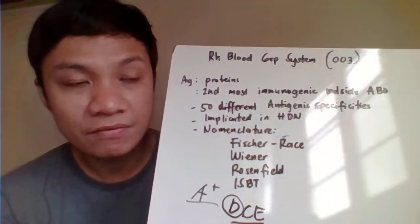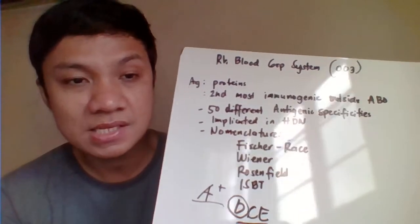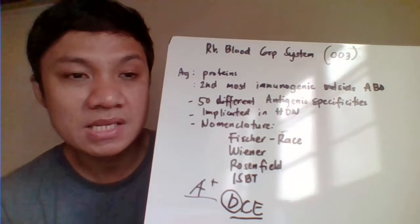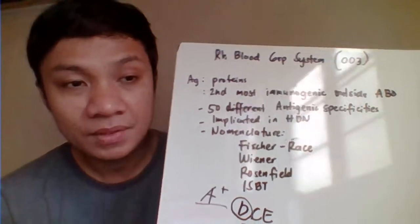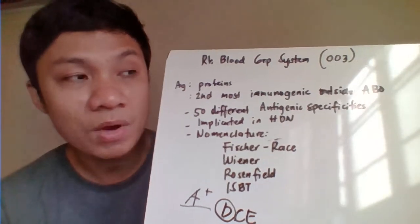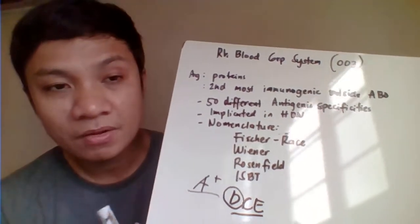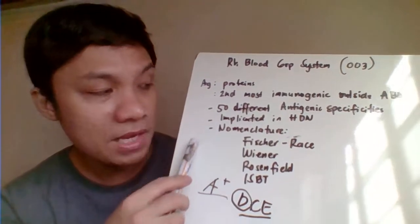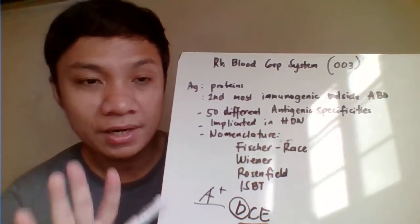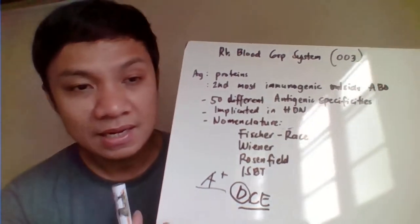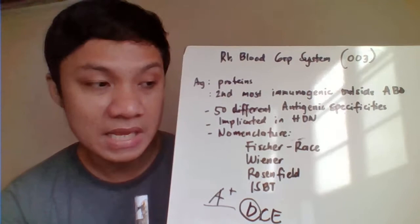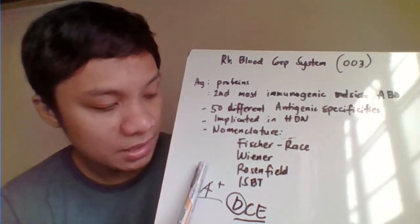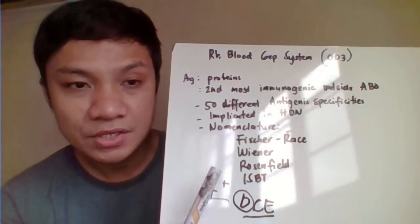There are approximately 50 to 57 different antigenic specificities or antigens included in your RH blood group system, making this a very complex blood group system. The complexity is highly dependent on the nomenclature — the way of assigning names to each of the RH antigens. We have the Fisher & Race, the Wiener, the Rosenfield, and the ISBT classification number.